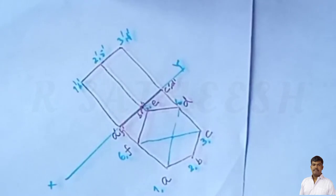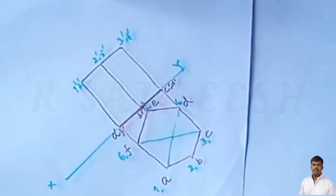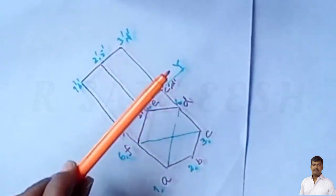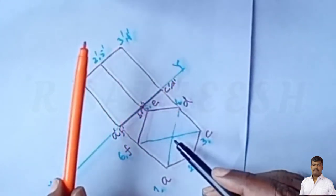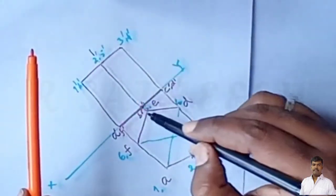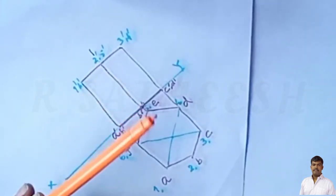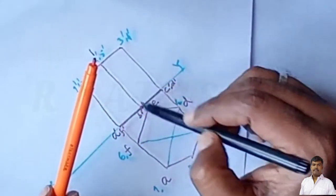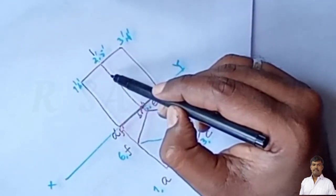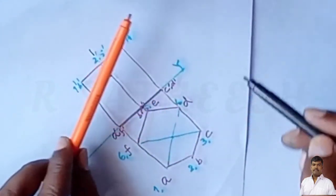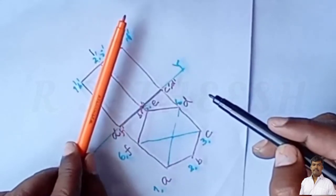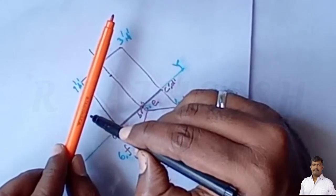Now the projection of the solid is complete. We proceed to the section. The cutting plane is inclined at 50 degrees to HP, perpendicular to VP, and passes through a point on the axis at a distance of 15 mm from the top. The total height is 55 mm, so we mark a point 15 mm from the top on the axis line. The cutting plane line is drawn at 50 degrees through this point.